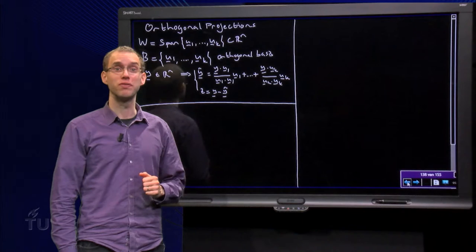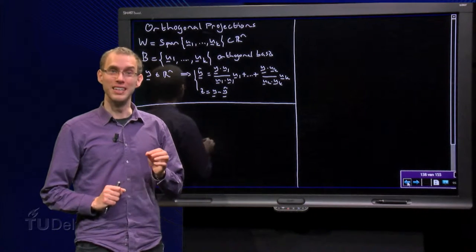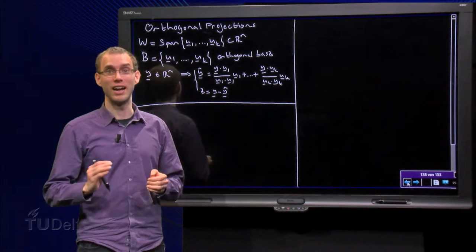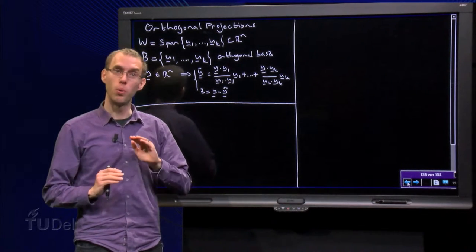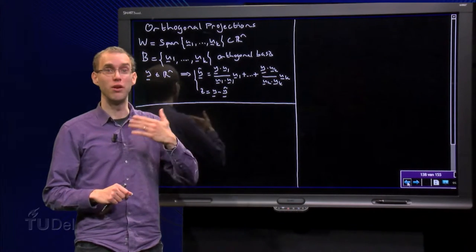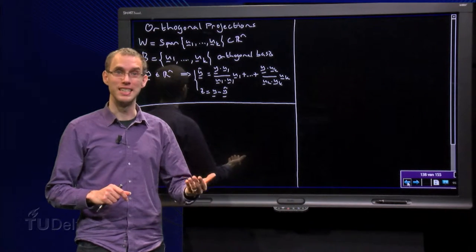We know how to find w-perp once we have w. We now want to decompose our vector y in Rn into two components. One in w we will call this component y-hat and one in w-perp we will call this component z.